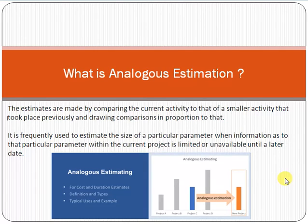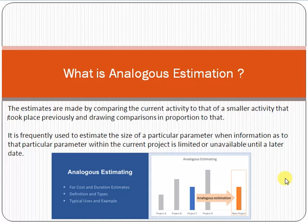The basis of that estimation is: first, historical data — the older project was done in five months with five thousand dollars. Second, the new project is approximately 20 percent more complex. Third, domain experts with expertise in e-commerce confirm that complexity. After discussion with technical leads, you decide the project will take six months and cost six thousand dollars.